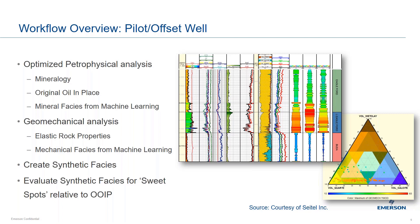We also evaluated the well in terms of geomechanical properties — specifically elastic rock properties and unconfined compressive strength — then used machine learning and cluster analysis to produce mechanical facies. Instead of evaluating the two facies models individually, we created a synthetic facies by combining the mineralogical and mechanical facies. It's that synthetic facies that we evaluated for the best original oil in place.